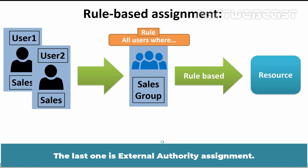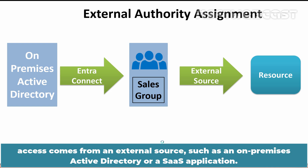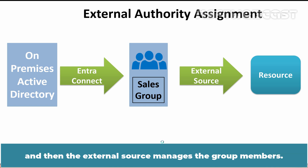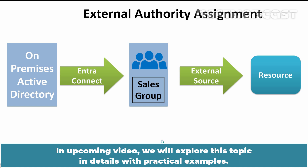The last one is External Authority Assignment. In this method, access comes from an external source such as an on-premises Active Directory or a SaaS application. The resource owner assigns a group to provide access to the resource, and then the external source manages the group members. Using these four methods, we can assign access rights on Microsoft Entra resources.